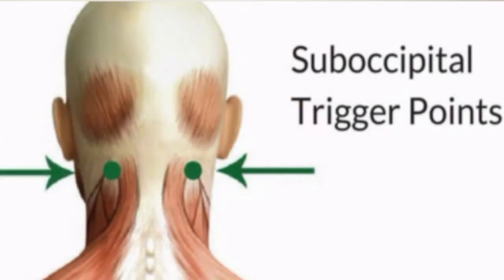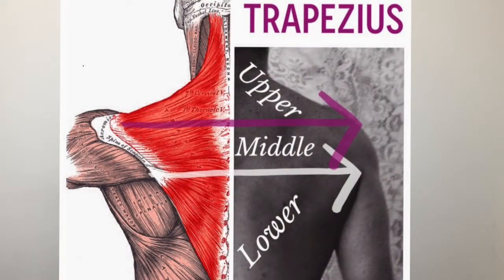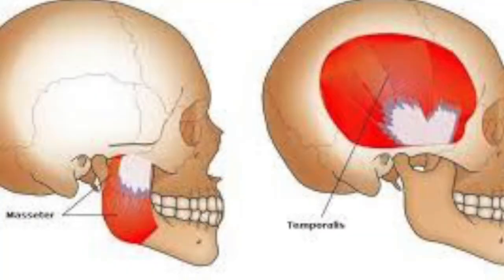Tension headaches can be caused by a lot of different things, a lot of different muscles, including your suboccipitals, which are in the back of your head, your sternocleidomastoid, your upper and lower traps, and your temporalis and your masseter.